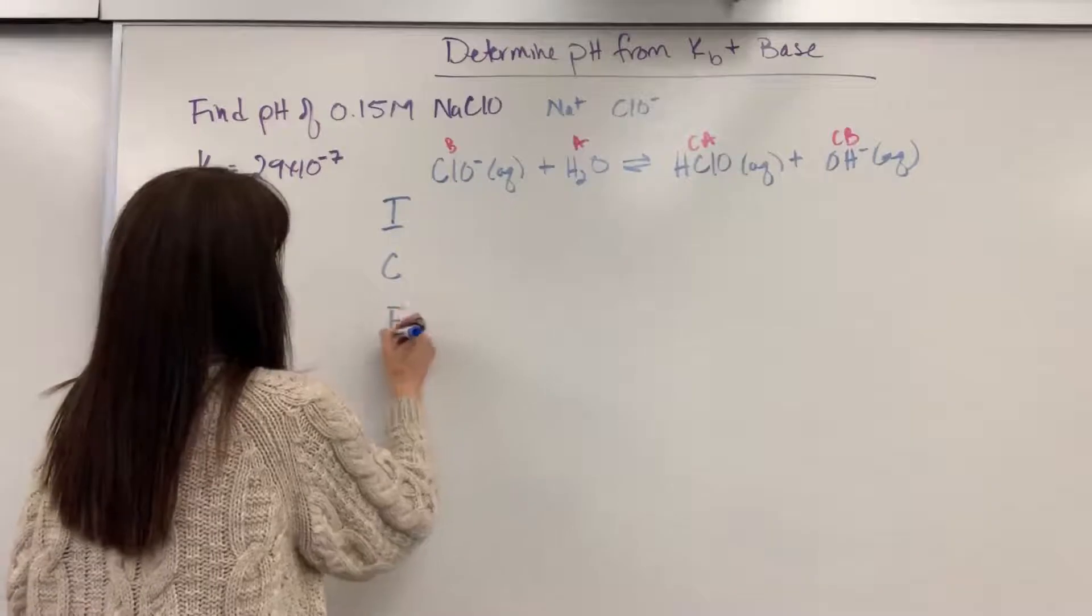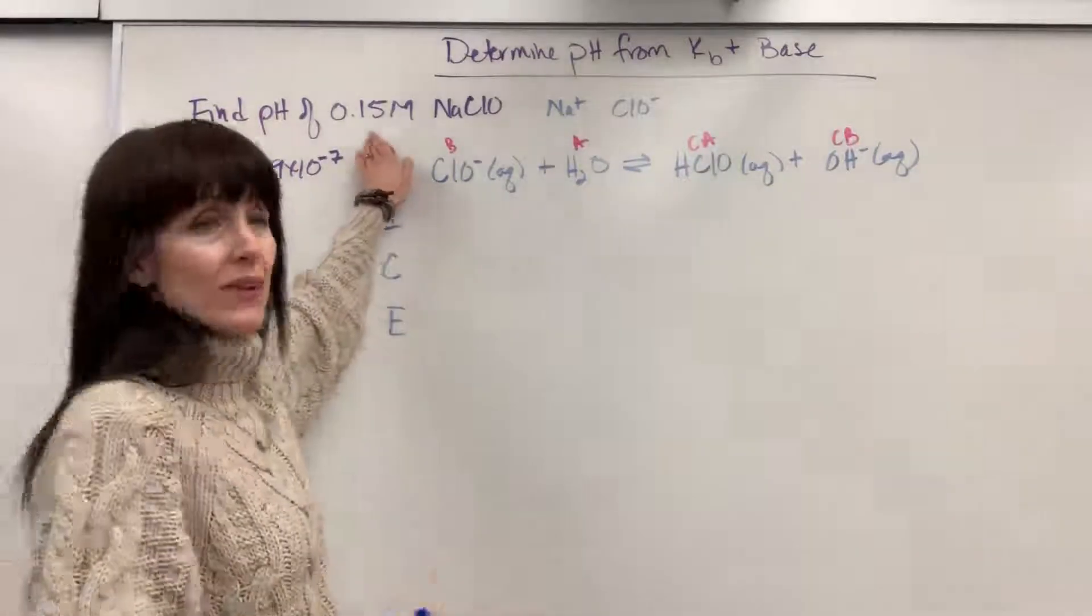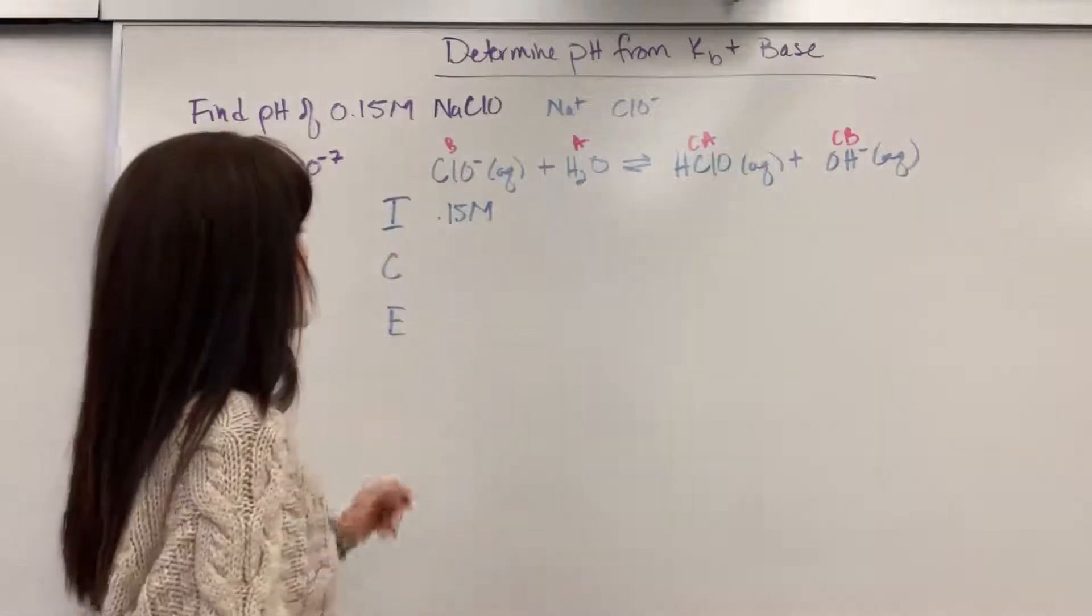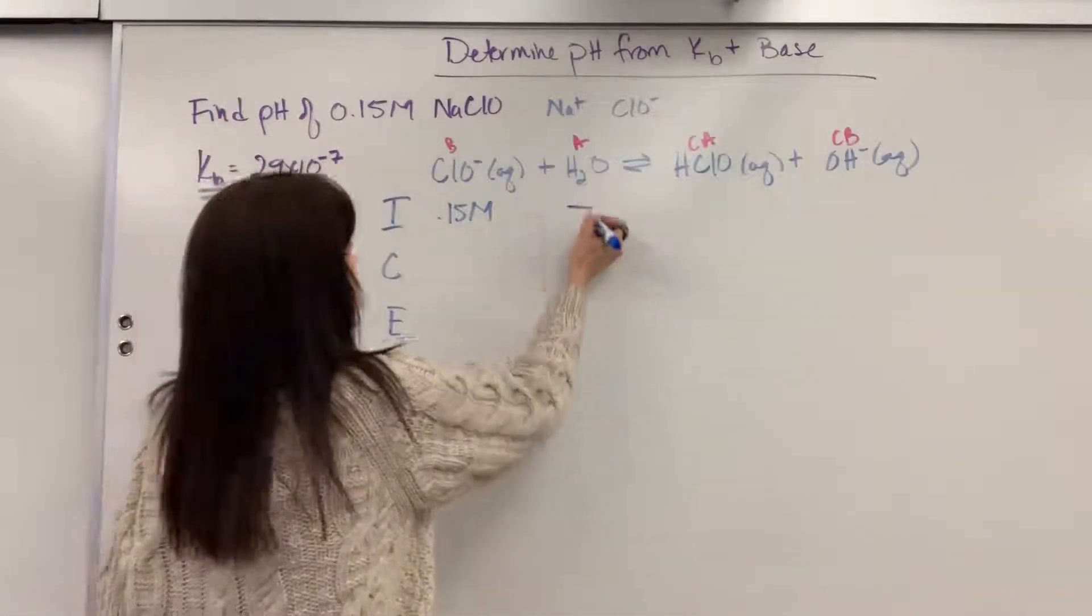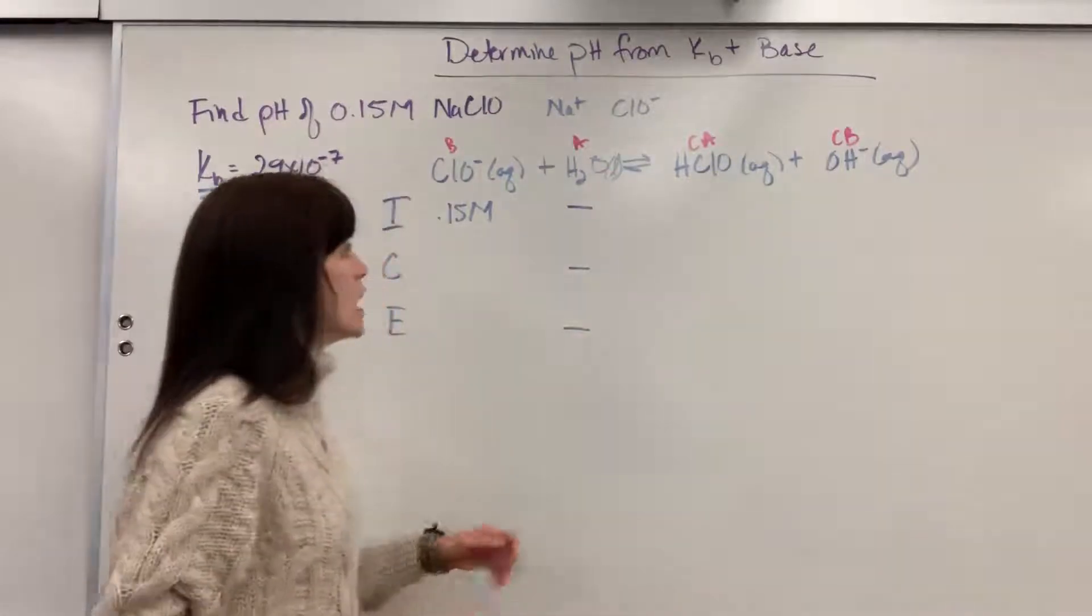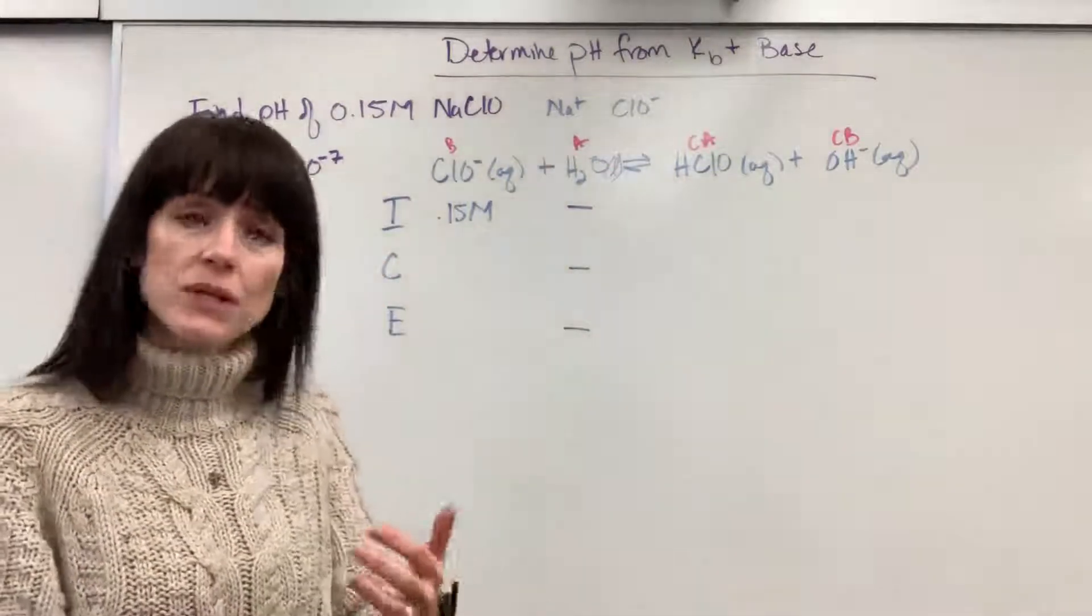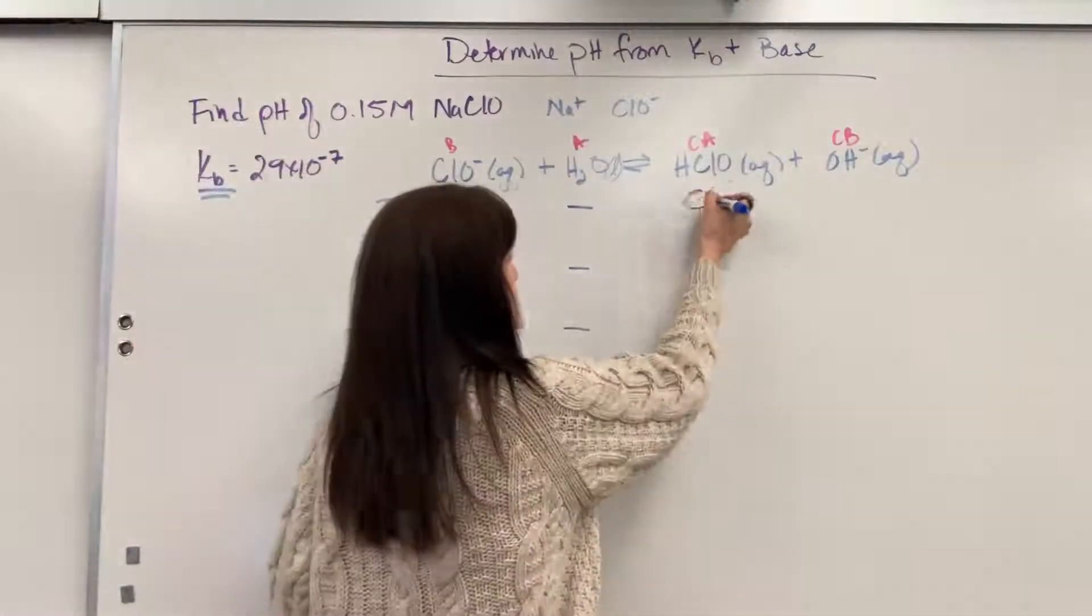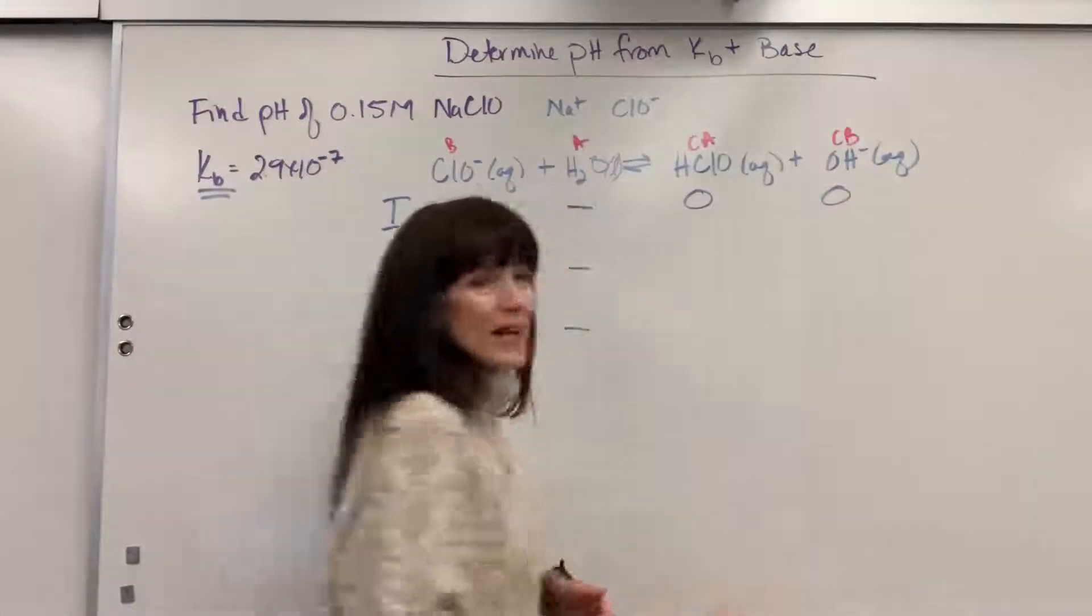To find those concentrations at equilibrium, I've got to do the ICE table. At equilibrium, I'll know the concentration of hydroxide. And if I know the concentration of hydroxide, eventually we can find the pH. So let's do our ICE table: Initial, Change, Equilibrium. Initially we are given a 0.15 molar concentration of the hypochlorite. Water is a liquid, so that's blank. Liquids and salts are not a part of the equilibrium expression. We have 0 hypochlorous acid, 0 hydroxide ion.